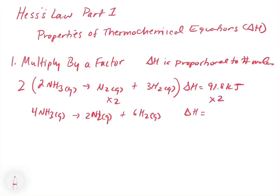The delta H for this reaction is going to be 183.6 kilojoules. Now we know what happens when we multiply through by a factor.